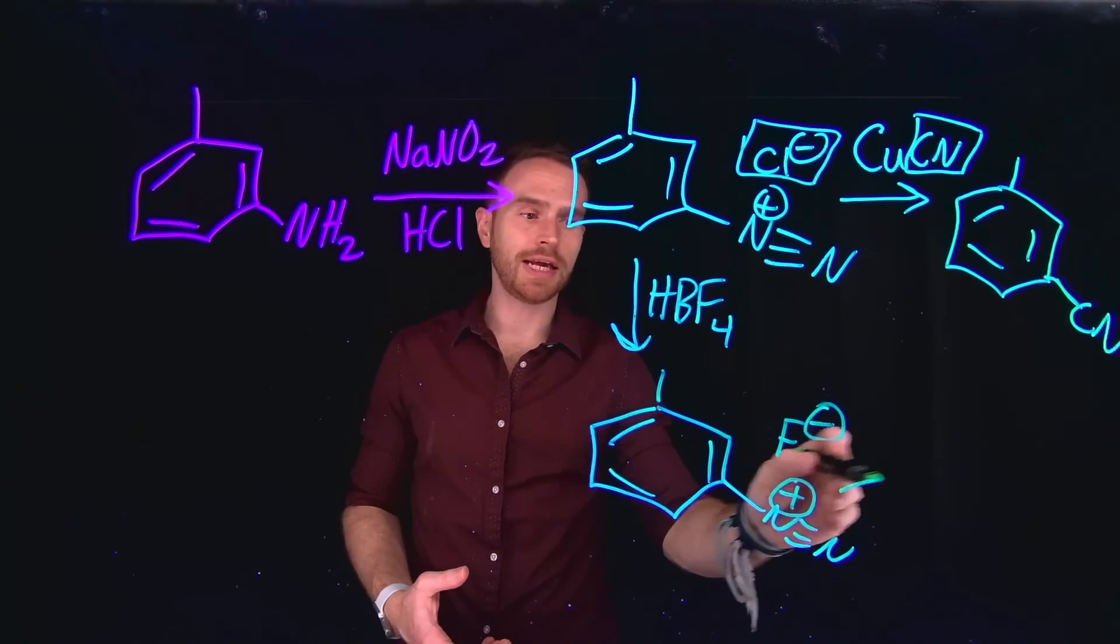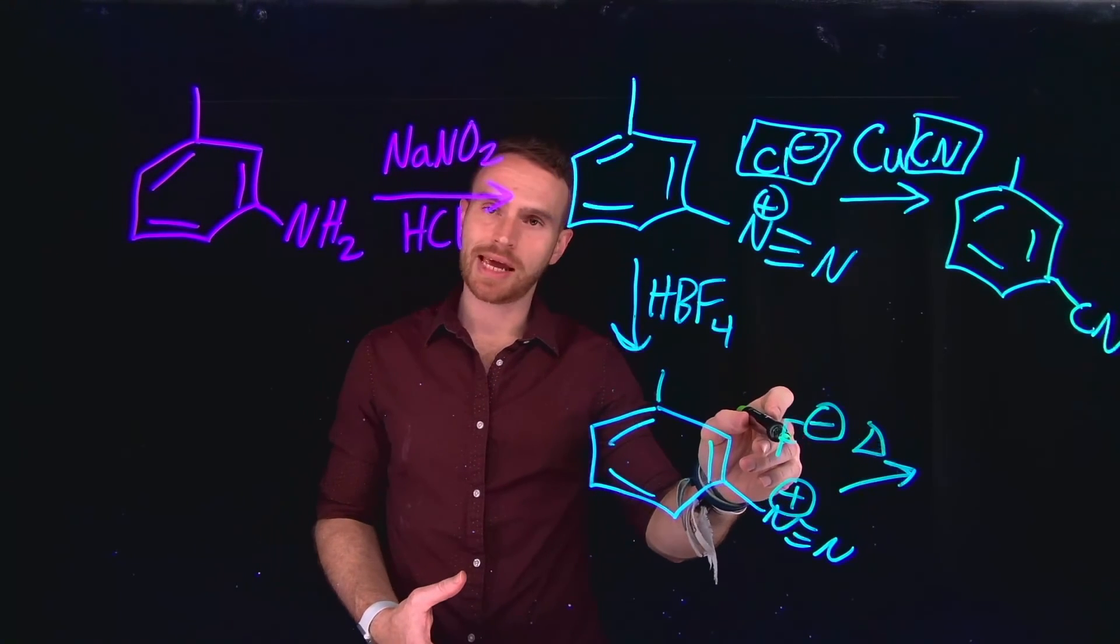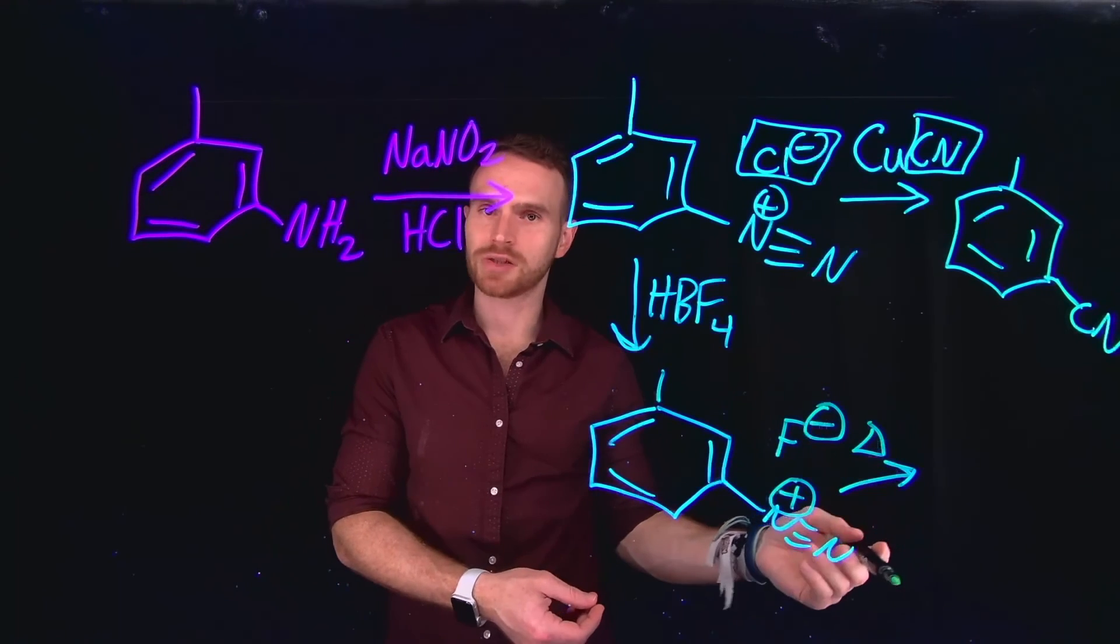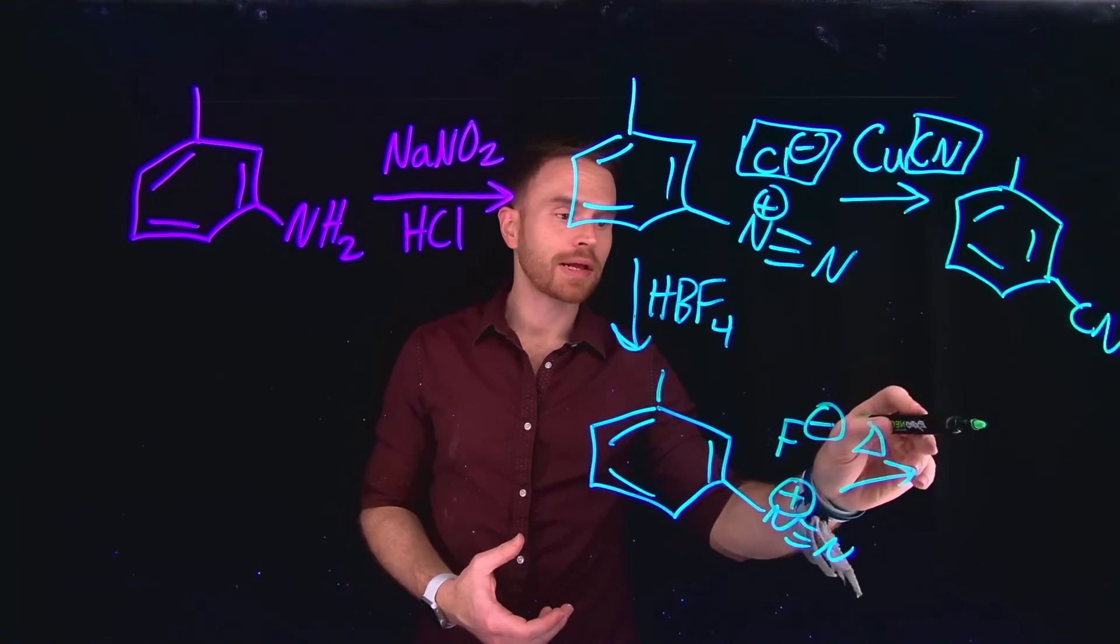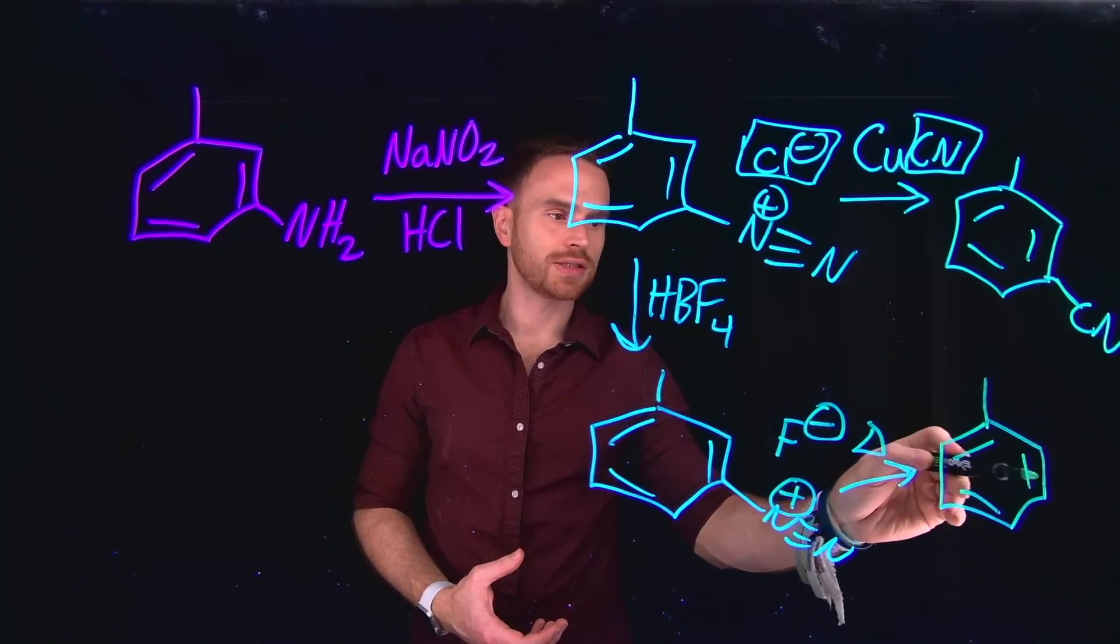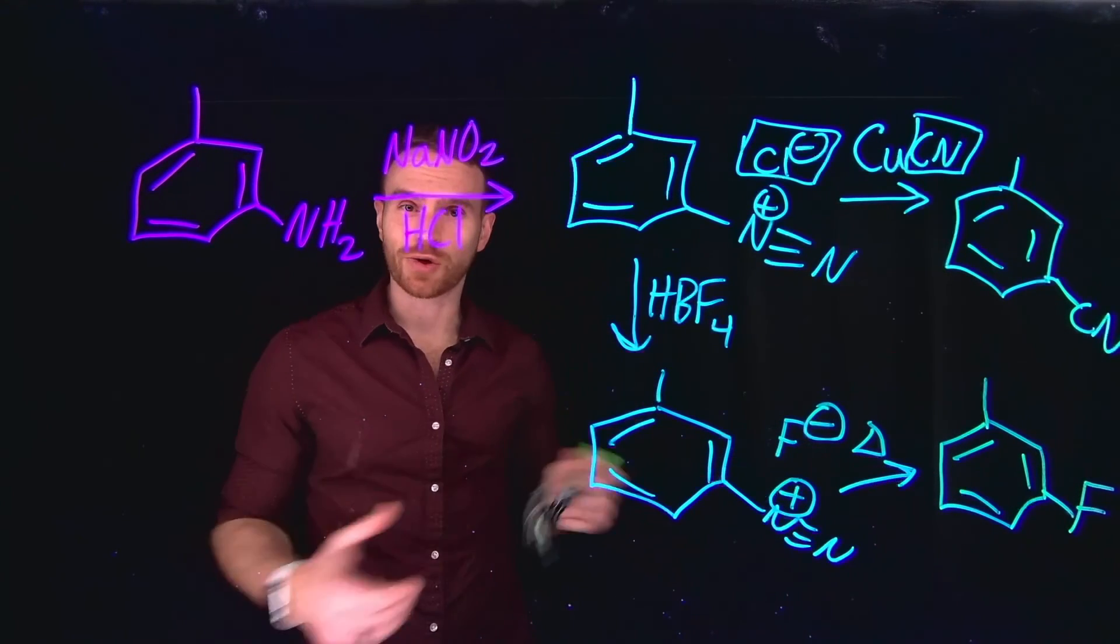And then from there, in the presence of heat, so delta means heat, this is actually going to take this halide and allow it to attack at this position and kick off the diazonium salt, which is a great leaving group, leaving behind a new aryl fluoride. So this is the way that we actually generate fluorides from diazonium salts.